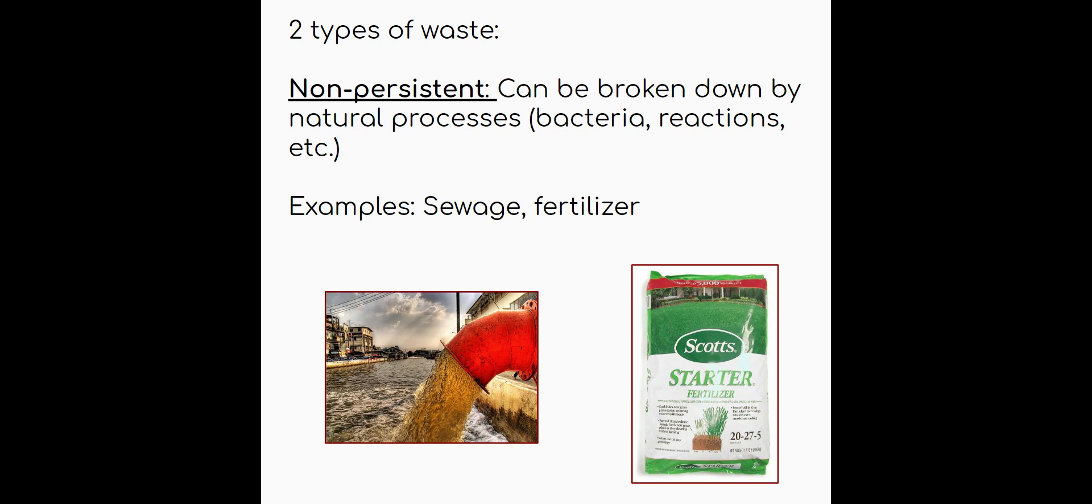So non-persistent is something you may not have heard anyone say yet, but essentially what it means is it can be broken down by natural processes. Things like bacteria, different types of chemical reactions, they can break down those different types of pollutants, and they actually can go back into the environment. Now sometimes they have a negative effect on the environment, but they're in now a more broken down form. So in your chart, please define non-persistent and then put the examples beside it. So definition can be broken down. Examples are things like sewage and fertilizer.